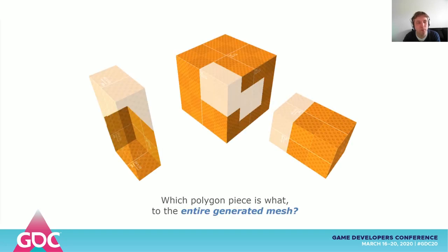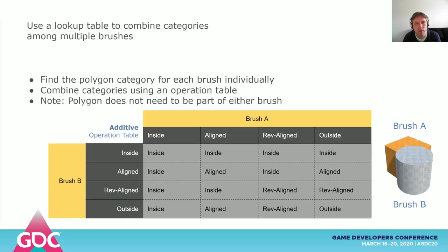Now remember this image again — what we want to know is what each polygon piece is to the mesh we're generating. We're essentially trying to figure out which polygons are part of the skin of the mesh we're building. Before we get to how to categorize against the combination of all the brushes in your level, let's explain how to categorize a polygon against two brushes and a boolean operation. When we categorize against a brush, we get a category. If we do this for both brushes, we can look up what the output category for the polygon would be for a particular boolean operation on both brushes using a table like this. Keep in mind that this polygon isn't necessarily part of either of the two brushes we categorize against here.